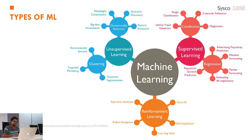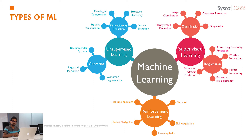Now let's see what the types of machine learning are. When we are given a machine learning problem, we first need to identify what type of problem we are dealing with to apply the appropriate solution. There are mainly three types of machine learning: supervised learning, unsupervised learning, and reinforcement learning.